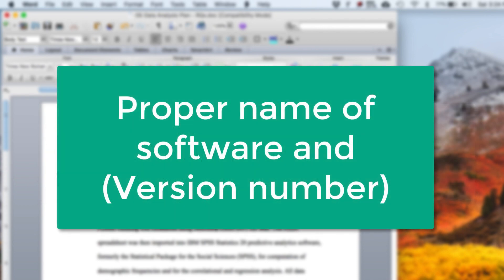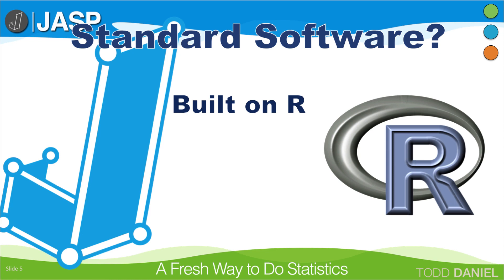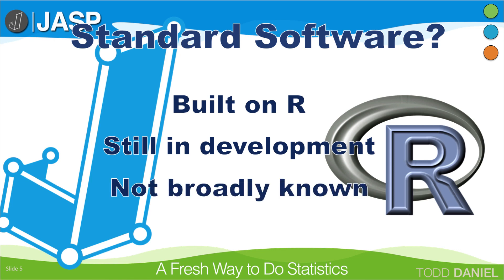Mention the name of the software with the version number in parentheses. But the question remains: is JASP standard software? JASP is built on the R platform, and I would feel comfortable calling R standard software, not requiring a reference. However, JASP is still in development. Many people, including academic researchers I talked to, have not heard of it yet. And although it is being used in more and more academic publications, I would still say that JASP is not standard software yet.